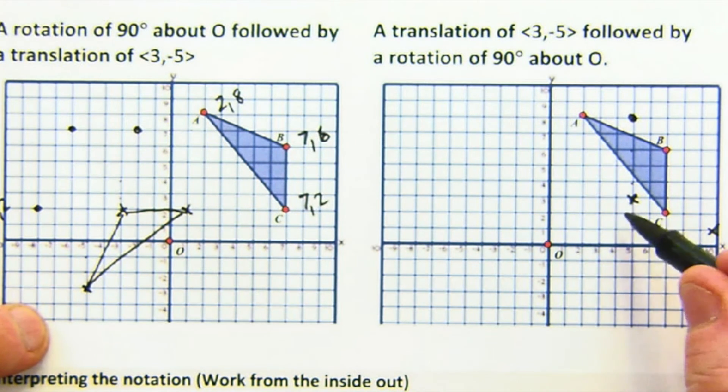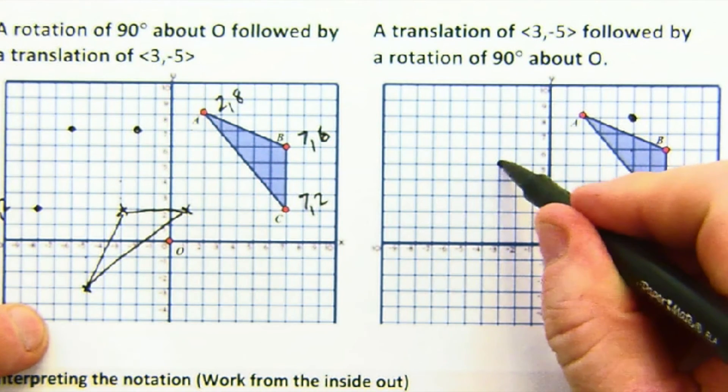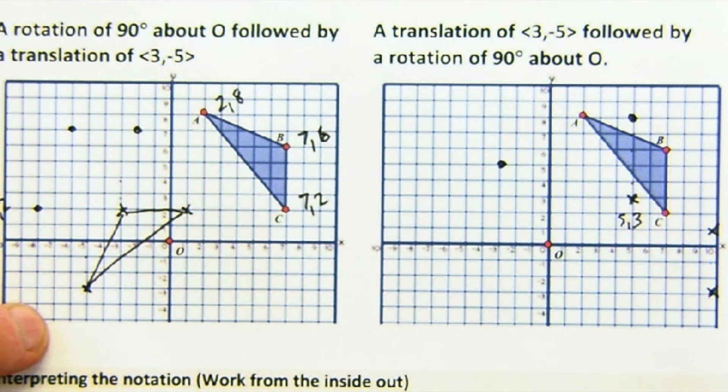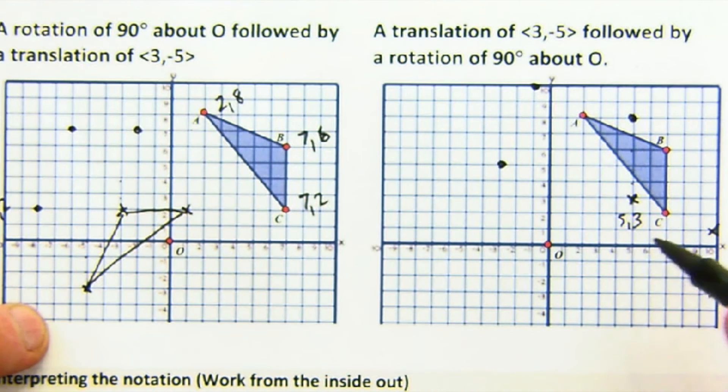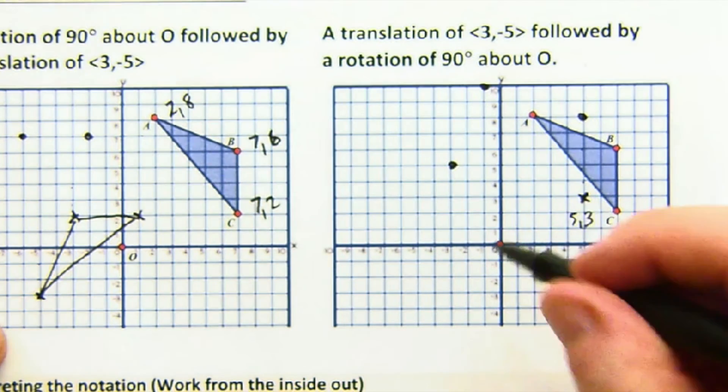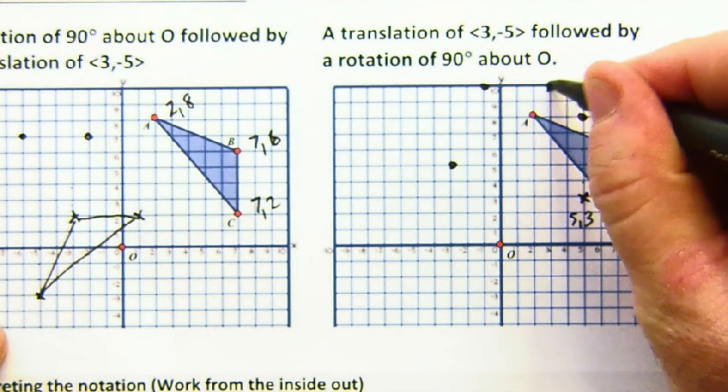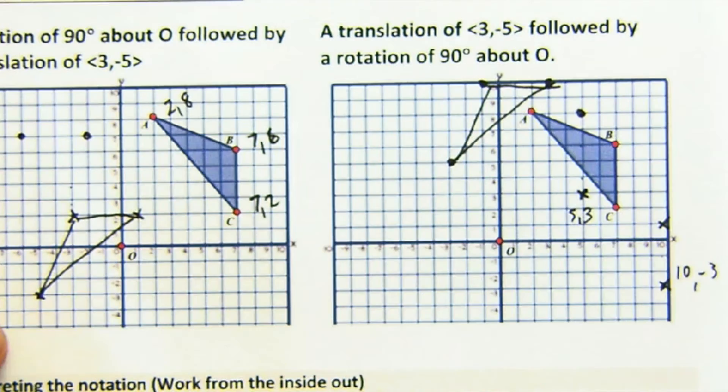So this is at (5,3). That would make it at (-3,5). See how my rules help me out quite a bit here. This is (10,1), so it would be (-1,10). And then this is (10,-3), and that would become (3,10). And so this would be my final resting place, which is quite a bit different from this one. Order definitely matters.